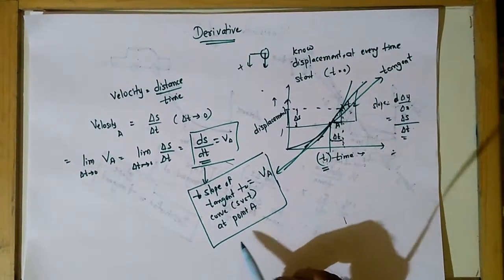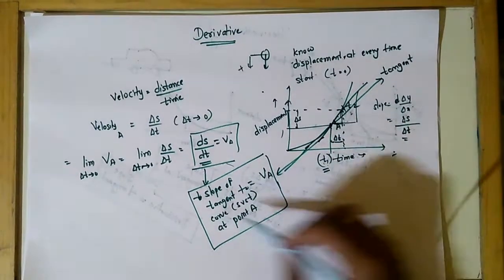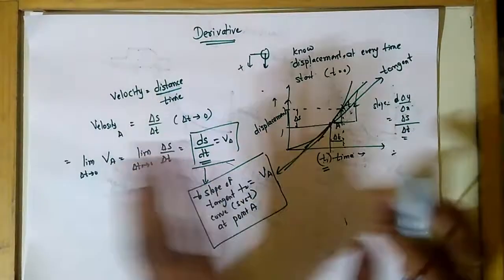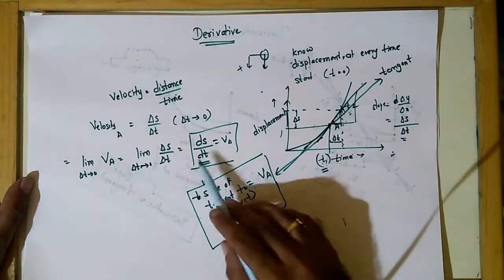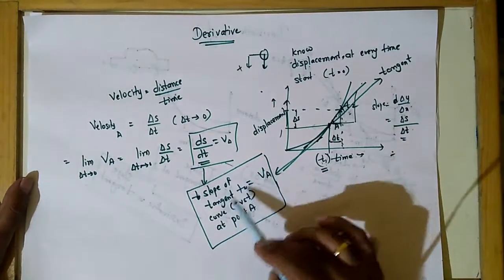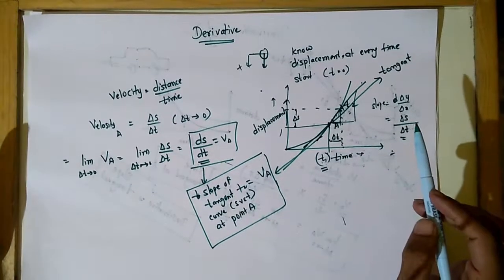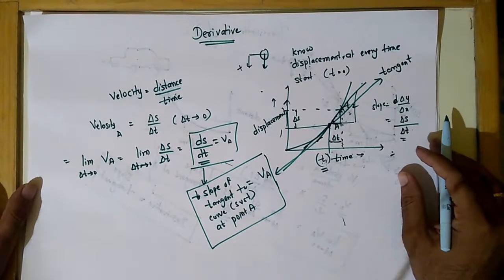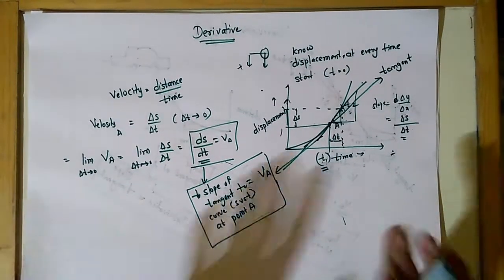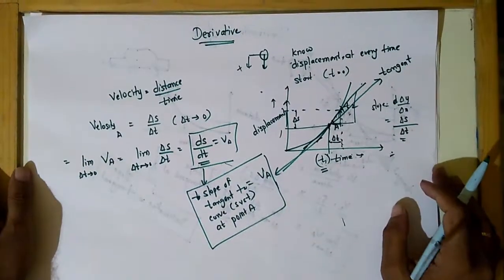Derivative is the slope of a tangent, and this is how we can explain it using a real life problem. So a derivative is the slope of a tangent, that's all. This is the simplified definition of a derivative.